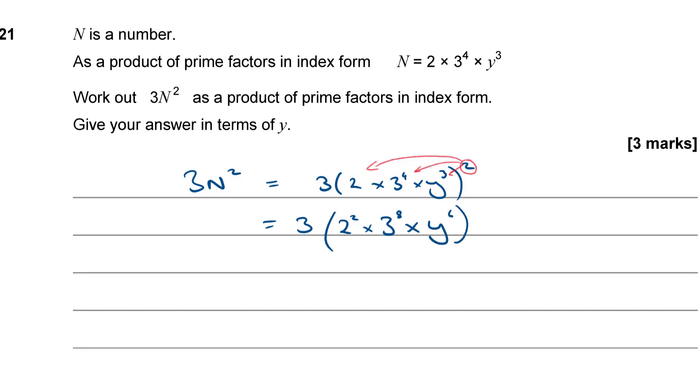So now I've got 3 lots of 2 squared times 3 to the 8 times y to the 6. Now those things are all just multiplied together, so I can just combine this term with this term. I've got 3 to the 8 and I times it by another 3, I'm simply going to get 3 to the 9. So, I'm going to rewrite this in ascending power. So, 2 squared times 3 to the 9 times y to the 6 and that is going to be my final answer.